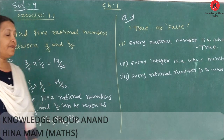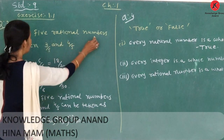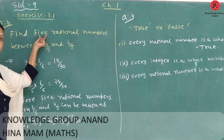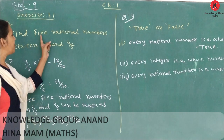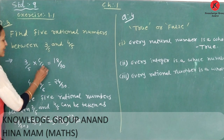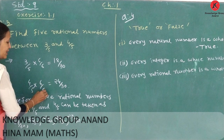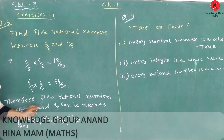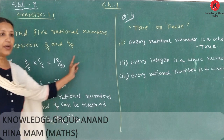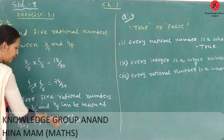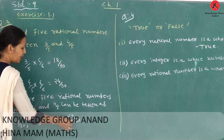Question number 3: Find 5 rational numbers between 3 over 5 and 4 over 5. How many rational numbers? 5. We multiply by 5 plus 1 equals 6 over 6. So 3 over 5 multiplied by 6 over 6, and 4 over 5 multiplied by 6 over 6, gives 18 over 30 and 24 over 30. Therefore, 5 rational numbers between 3 over 5 and 4 over 5 are: 19 over 30, 20 over 30, 21 over 30, 22 over 30, and 23 over 30.